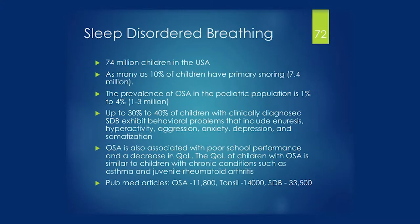Sleep disordered breathing is a significant problem. There are 74 million children in the United States, and as many as 6 to 12% have primary snoring. The prevalence of OSA is about 1 to 6%, meaning millions of kids are affected. These children have behavioral problems, enuresis, hyperactivity, aggression, anxiety, depression, and somatization — all of which improve when sleep disordered breathing is treated. Their quality of life is affected significantly, comparable to chronic diseases like juvenile rheumatoid arthritis or asthma.